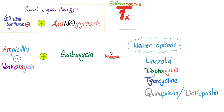Management: how can we manage enterococci? It is complicated, but here's the basic idea. You need to combine two drugs. The first is a cell wall synthesis inhibitor. You cannot use cephalosporins — cephalosporins cannot cover enterococci, so do not use any cephalosporin.